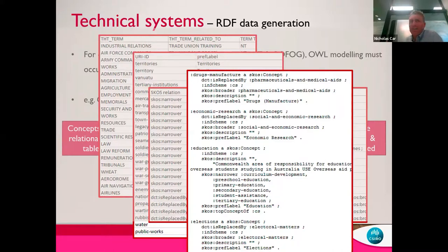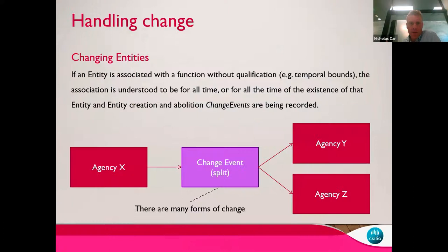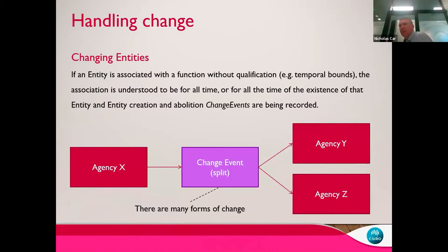This is an easy one because the terms in the CRS system already had all the semantic information. In other systems that information isn't there and other work has to be done. This next piece is actually core to the project — it's about handling the changes we experience in the project. We can have changing government entities: here the diagram shows a theoretical split where agency X gets split into agencies Y and Z, and we deal with this kind of change by recording change events.